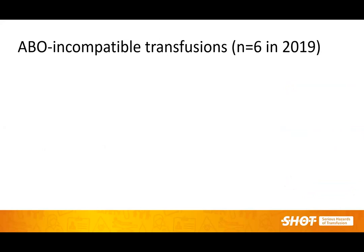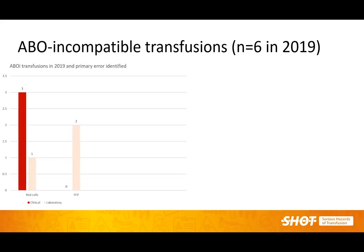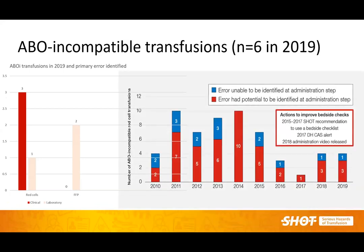Focusing on error reports: inadvertent ABO incompatible transfusions are considered essentially preventable and termed never events. When you have robust processes in place, staff are compliant and vigilant, these are preventable. However, we had six such inadvertent ABO incompatible transfusions in 2019 — four related to red cells and the rest to FFP. There was a combination of clinical and laboratory errors, but the majority had the potential to be identified at the administration step, stressing the importance of the bedside administration checklist. A Chief Medical Officer's alert was also issued to ensure the checklist is followed.